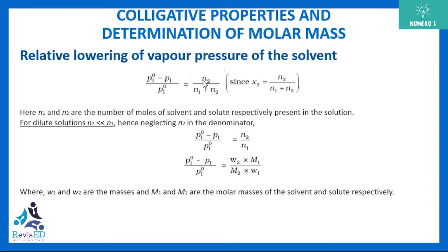x2 is the mole fraction — number of moles of solute divided by total moles of all components. For dilute solutions where n2 is far less than n1, we can ignore n2 in the denominator and approximate x2 ≈ n2 / n1. Expressing moles as given weight divided by molecular weight lets you calculate molar mass by measuring the relative lowering of vapor pressure.